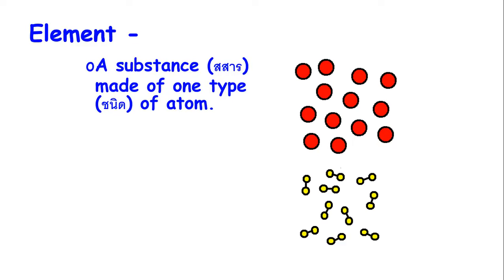Pictures of elements. A substance made of one type of atom. You'll see the red circles. That's an element. It's one atom. Each of those represents one atom.